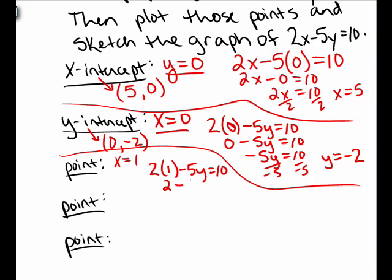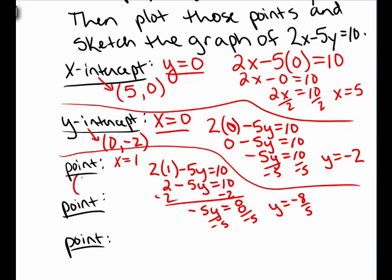I now have 2 minus 5y equals 10. Subtracting 2 on both sides, we get negative 5y equals 8. Dividing both sides by negative 5, we get y equals negative 8 fifths. So when the x-value is 1, the y-value is negative 8 fifths. The point 1 comma negative 8 fifths is a solution to this two variable equation. This point is a point on the graph of this line.